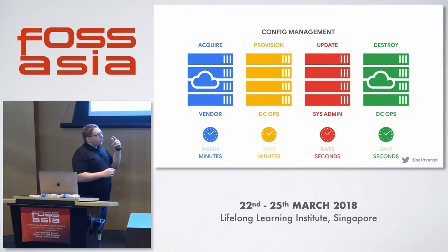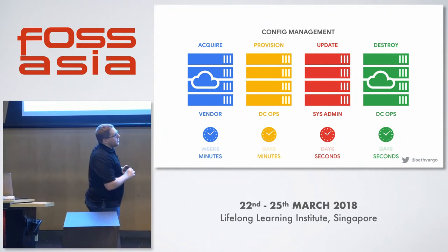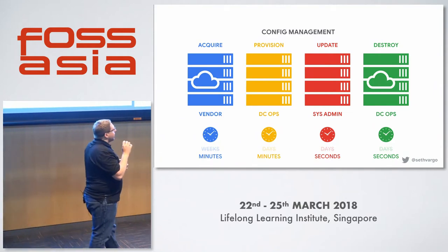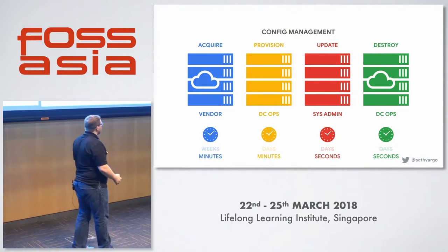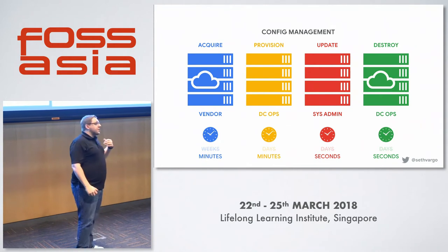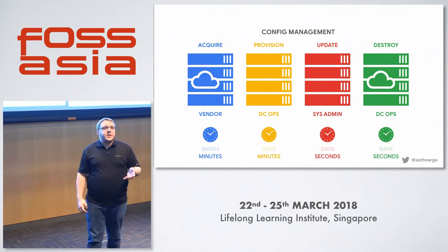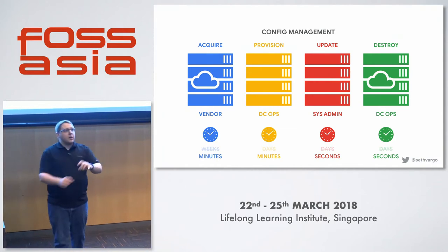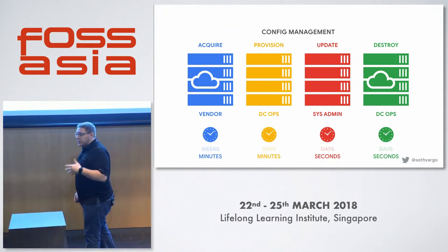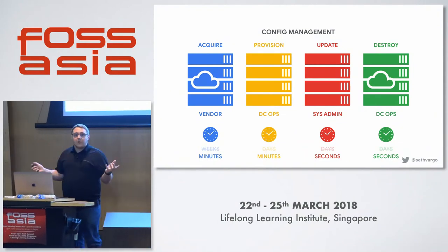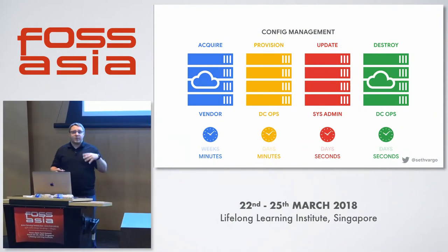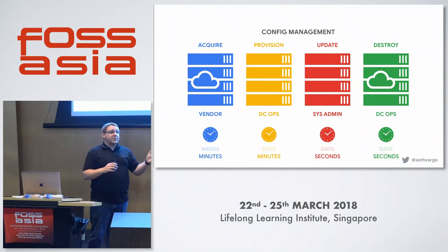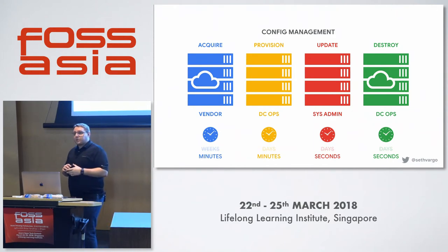What happened in the middle? The middle actually happened before the outer — we saw configuration management happen before massive cloud adoption. Config management took the process of initially provisioning servers down from days to minutes, and incremental updates from days to seconds. Using tools like Chef, Puppet, Ansible, or Salt, you can immediately push out a change to your entire fleet of servers and it's propagated within the hour. This was something incredibly unique.